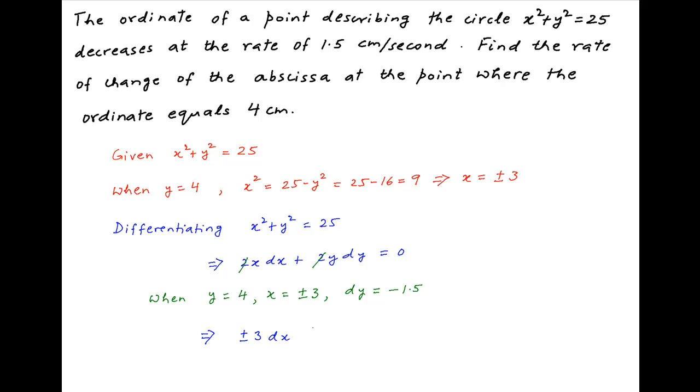Plugging these values into the above equation, we get plus or minus 3 times dx plus 4 times minus 1.5 equals 0.